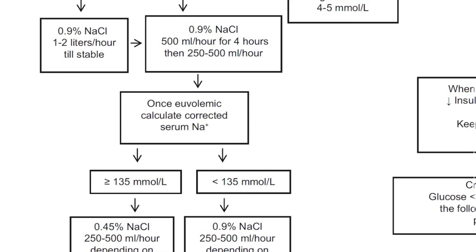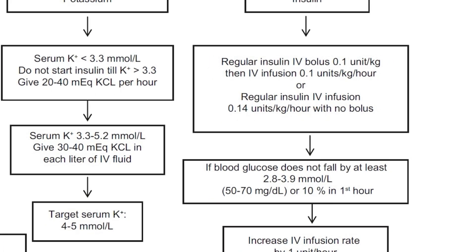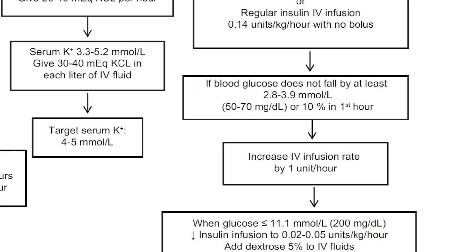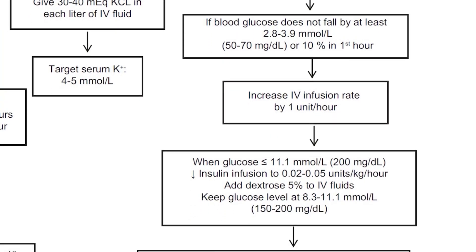For insulin, regular insulin is used. An IV bolus can be given followed by infusion, or IV infusion can be started without a bolus. The bolus dose is 0.1 unit/kg and infusion is 0.1 unit/kg/hour. If blood glucose does not fall by at least 50 to 70 mg/dL or 10% in the first hour, we double the insulin infusion rate. When glucose falls below 200 mg/dL, the insulin infusion is adjusted and dextrose 5% is added to IV fluids.